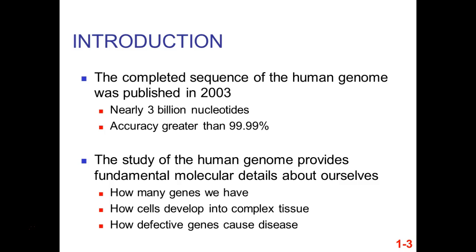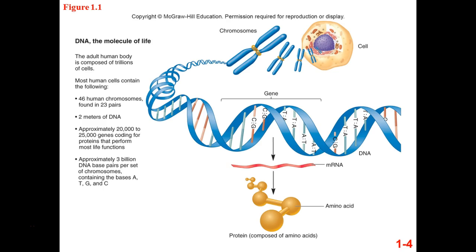The project helps our cells develop into complex tissues and tells us how defective genes can cause disease. That poster actually has different markings showing what genes are affected for what diseases, what defect you have. Approximately 20,000 to 25,000 genes are encoded in our genome among all our chromosomes.